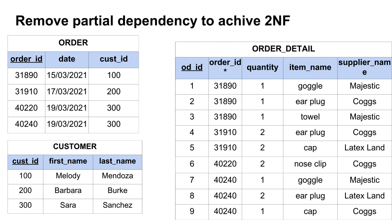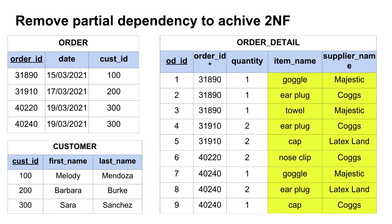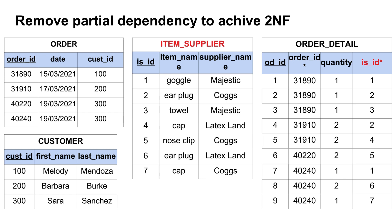In the order detail table, we see that the attributes item name and supplier name are not completely dependent on the primary key OD_ID. So, like we did earlier, we move those two attributes to a new table called 'item supplier' and link item supplier with the order detail table. We need a primary key for the item supplier table, but item name and supplier name are text fields and not suitable. Therefore, I have introduced a primary key called IS_ID (item supplier ID) and added IS_ID as a foreign key in the order detail table. Our logical data model is now in second normal form with four tables.